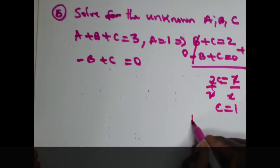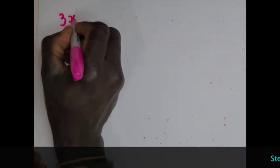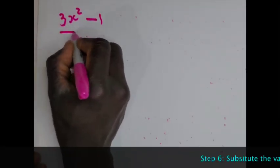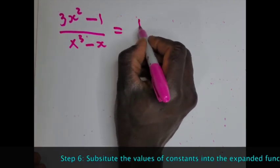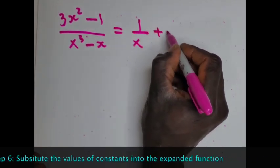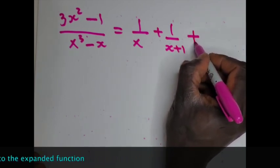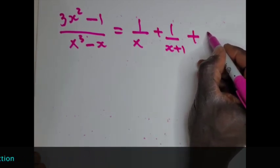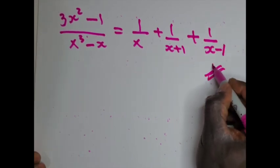Since B equals C, that means B = 1. Write the expression: A = 1, B = 1, C = 1. That's your answer. Thanks for your time.